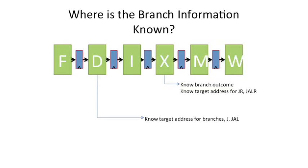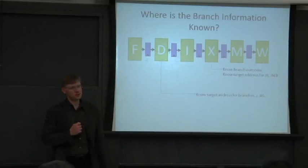So we know that our target address for branches, jumps, and jump and link will likely be known here.